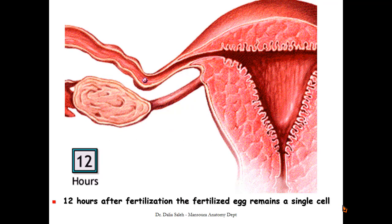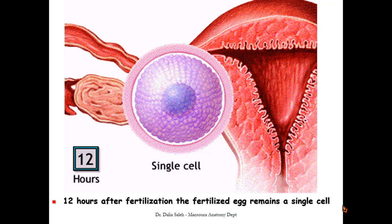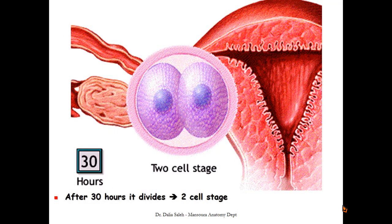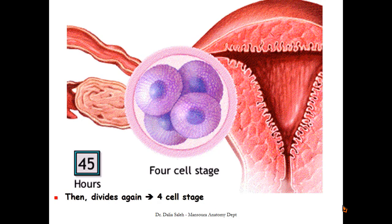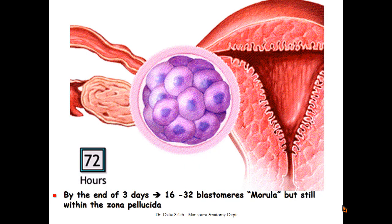Let me remind you first of the events that took place at the first week of development. 12 hours after fertilization, the fertilized egg remains as a single cell — the zygote, made of 46 chromosomes. Then after 30 hours, it starts to divide and become two cells, which we call the two-cell stage. These two cells divide again and form a four-cell stage. By the end of the third day, we end up with 16 to 32 blastomeres — this stage is called the morula.